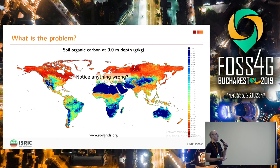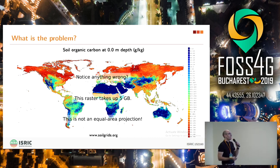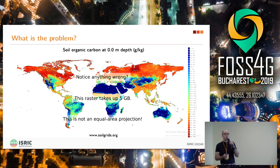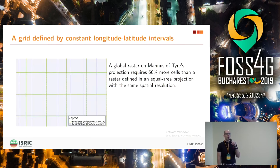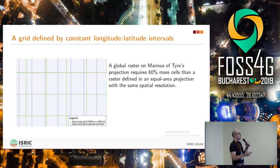If I tell you that this map takes up 5 gigabytes and took several days to compute — does that ring any bells? There is an obvious problem: it's not an equal area projection. This is a raster where the cells are defined by intervals of latitude and longitude. The problem is that these cells start to become really small as you move away from the equator. In green are cells defined at regular intervals in an equal area projection, and in blue cells defined in what is called the Marinus of Tyre projection — a very old projection. The cells get smaller and smaller; in the end you have 60% more cells in your raster with this kind of projection than if you used an equal area projection.